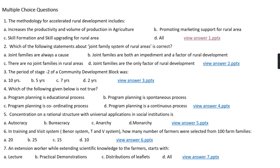Question number two: Which of the following statements about joint family system of rural area is correct? Option A, joint families are always a cause; option B, joint families are both an impediment and a factor of rural development; option C, there are no joint families in rural area; option D, joint families are the only factor of rural development.